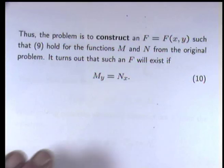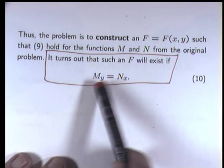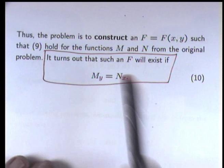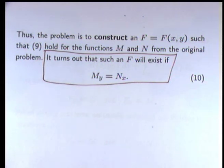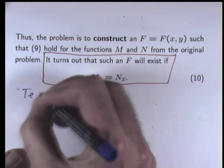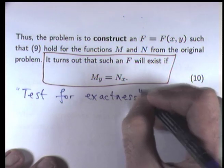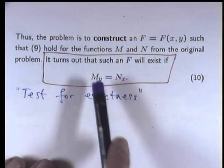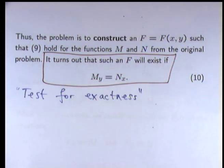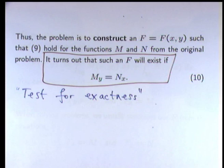These functions don't always exist, but such an F will exist when these two partial derivatives are equal. This is known as the test for exactness. M and N need to be continuous functions, and these partial derivatives not only need to be equal but they need to be continuous as well.